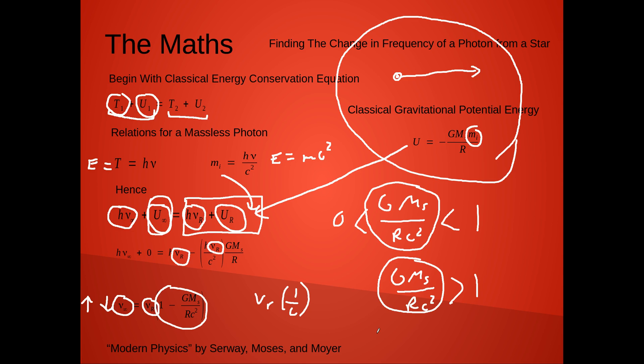And if you use the equation c equals the frequency of the photon times its wavelength, you can actually solve for the shift in wavelength by solving this equation for frequency, and thus for any star, you can calculate the redshift of its light.